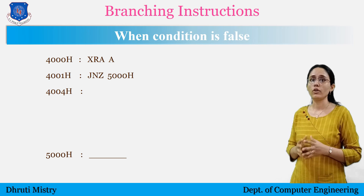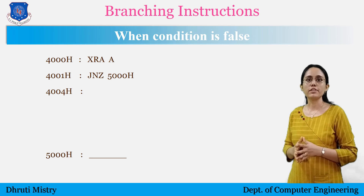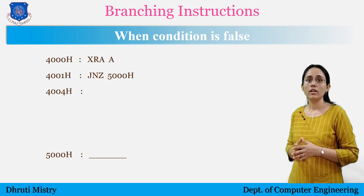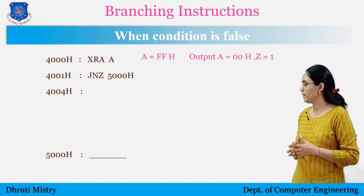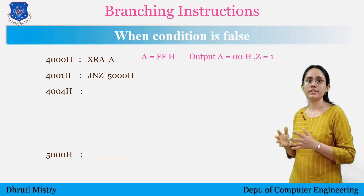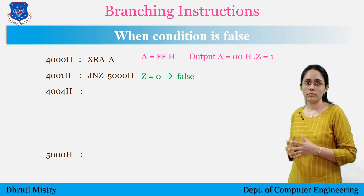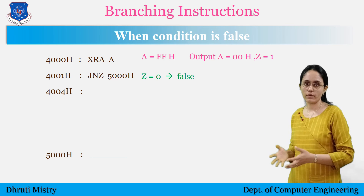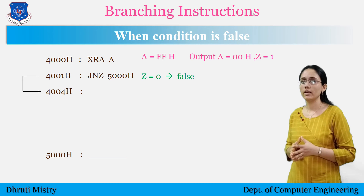In the case of when the condition is false: for example, here we have a segment of program in which we have used 'Jump If Not Zero' (JNZ) instruction. According to the previous example, the value of the zero flag is 1. If I am using the JNZ instruction, it will check the value of the Z flag. According to this instruction, the zero flag should be 0. But the actual value of the Z flag is 1, so the condition is false, and control will transfer to the next instruction instead of the 5000H location.